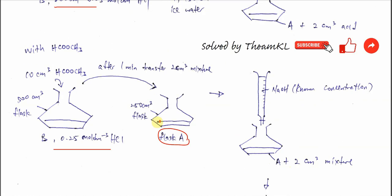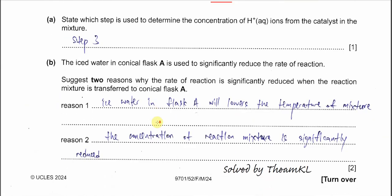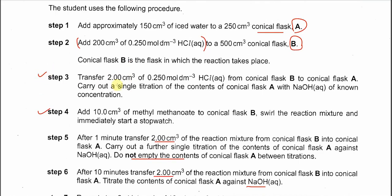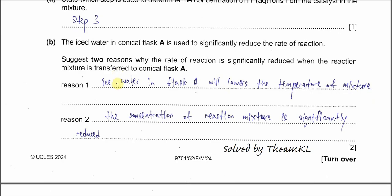Part A: which step is used to determine the concentration of H⁺ from the catalyst? Obviously it is step 3, as explained. Part B: the ice water in conical flask A is used to significantly reduce the rate of reaction because of lower temperature. There are two reasons why the rate of reaction is significantly reduced when the reaction mixture is transferred to conical flask A. Reason 1: the ice water in flask A lowers the temperature of the mixture; lower temperature means the rate is slower.